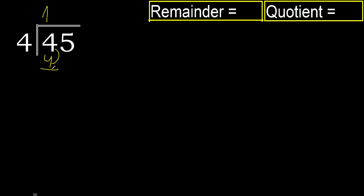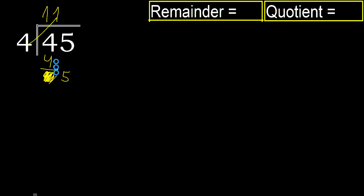4 minus 4 is 0. Next, bring down the 5. 4 multiplied by 2 is 8 — 8 is greater. 4 multiplied by 1 is 4. 5 minus 4 is 1.